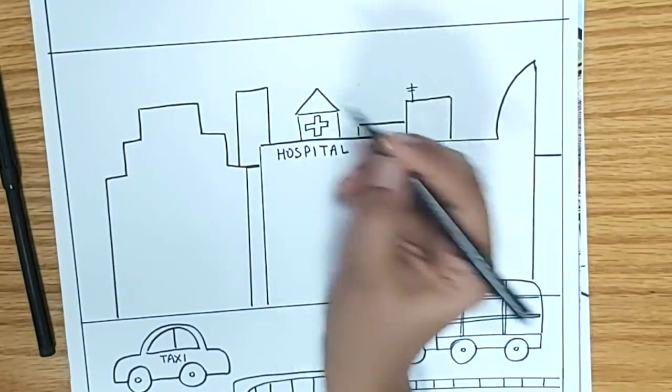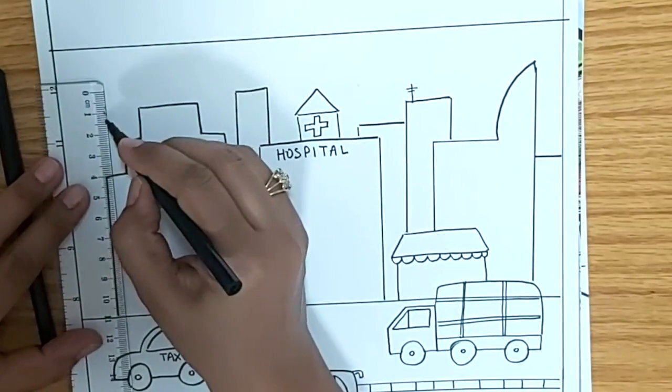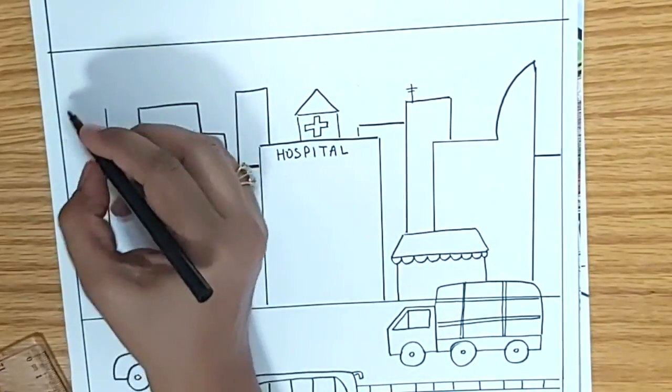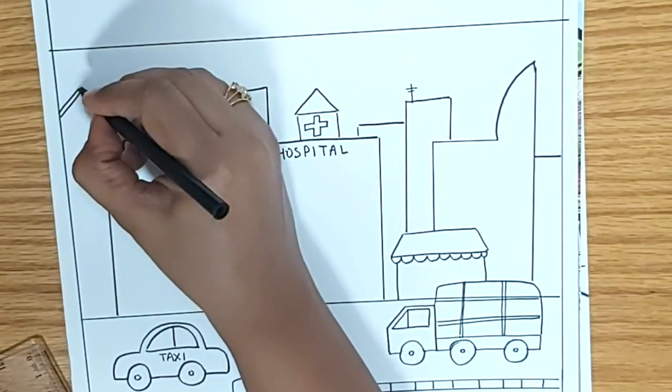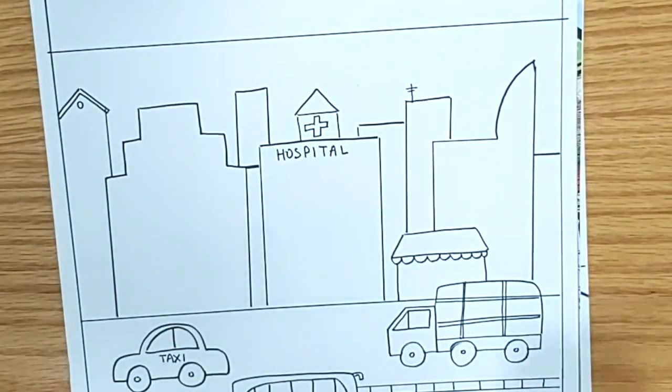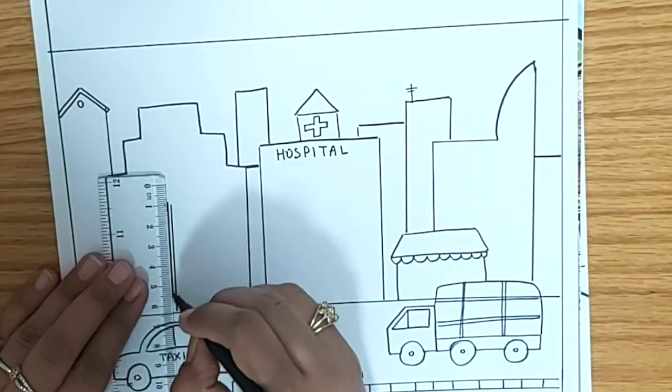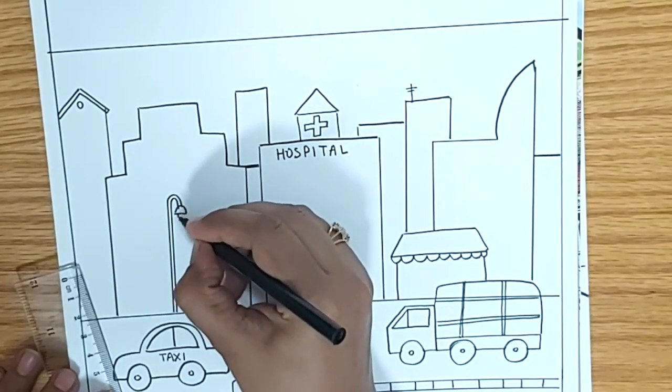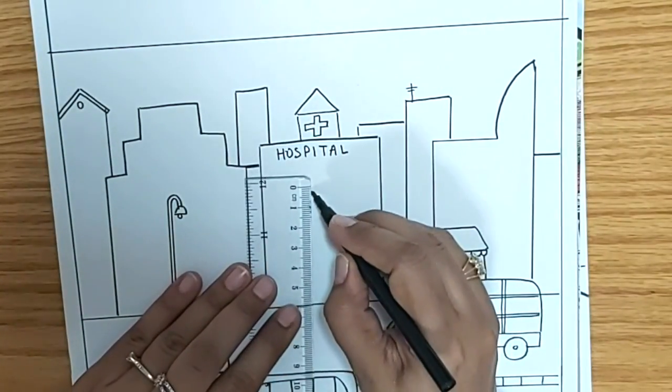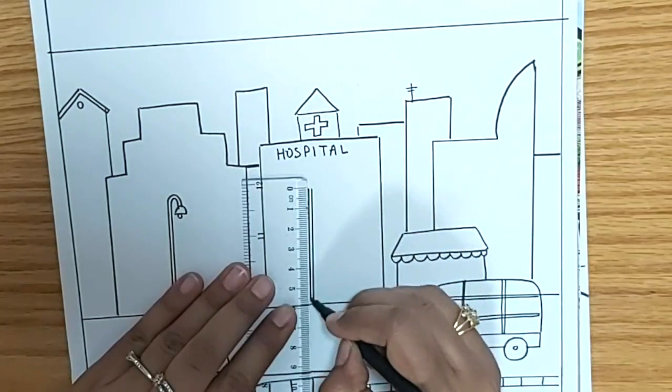After we are done placing all those buildings that we wanted to, we'll have some fine details in them. Here I'm adding some street lights which are evenly placed on the roadside.